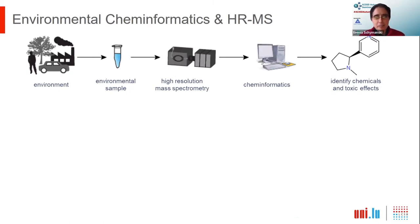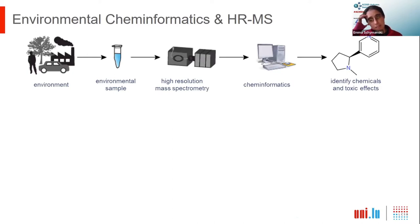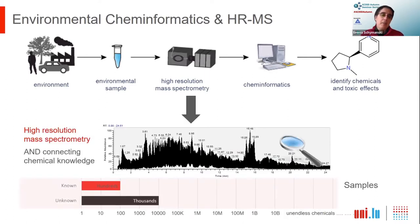My group looks at environmental cheminformatics. We look at the environment, take various samples, interrogate these with high resolution mass spectrometry, then process the data using lots of cheminformatics methods. The ultimate aim is to identify chemicals and their toxic effects in the environment. What's key to our research is that high resolution mass spectrometry is basically the workhorse — this is how we get the fingerprint of the chemicals in the environment. Our challenge is connecting the signals we see to the chemical knowledge to generate insights.